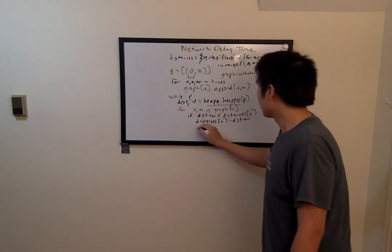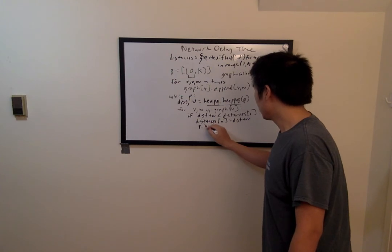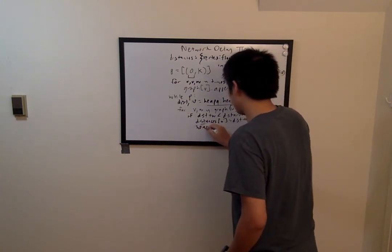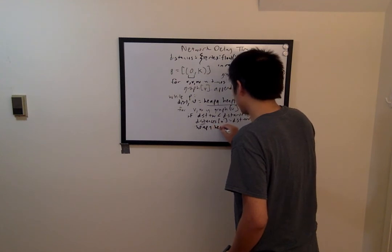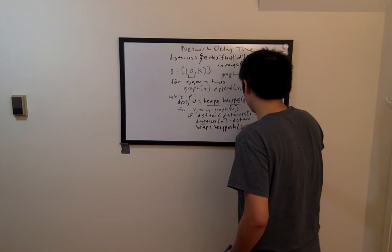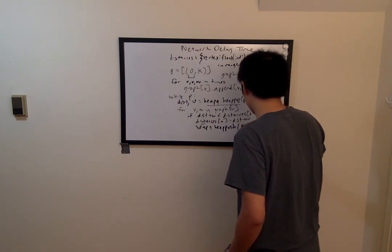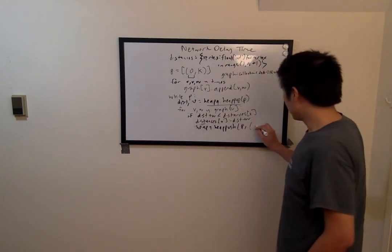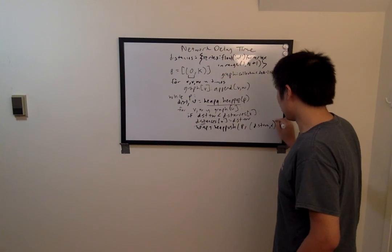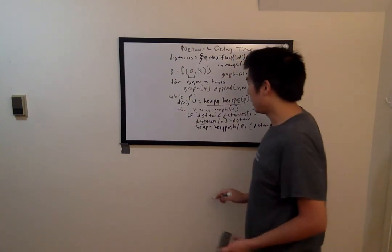So we will do heapq dot heappush, and then use our heap pq as the first parameter, and then the tuple distance plus w, v as the second tuple. And then finally, at the end, we will say,